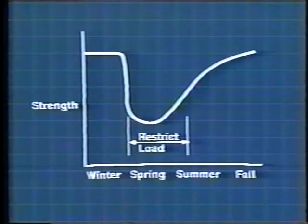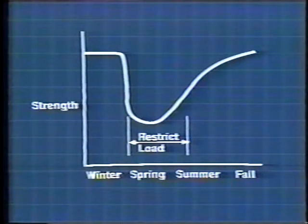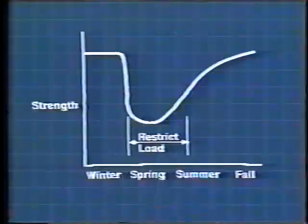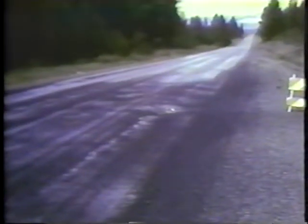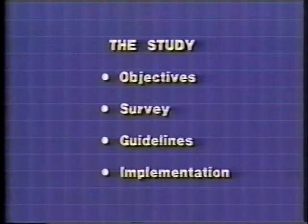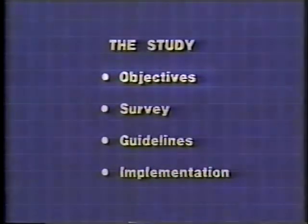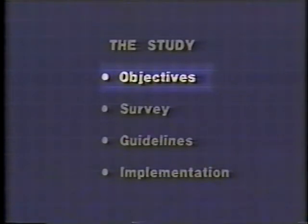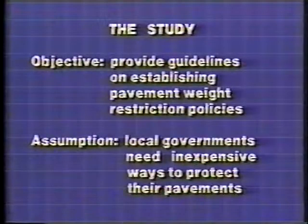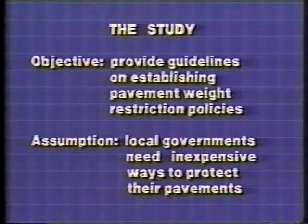Thawing can produce a rapid decrease in pavement strength below summer-fall conditions, followed by a gradual recovery over a period of weeks. Here is one result of thaw-weakened pavement. This bituminous surface treatment is potholed and very rough during the thawing period. The Washington State Transportation Center researched these cold weather problems with the intent of designing methods to help you deal with them.